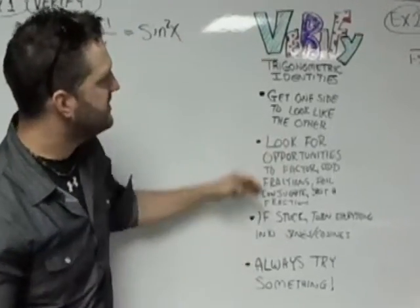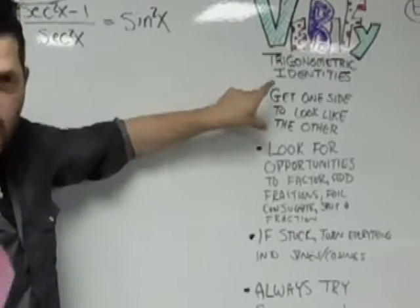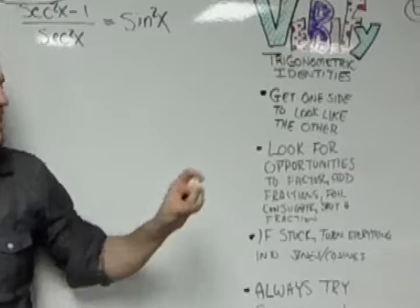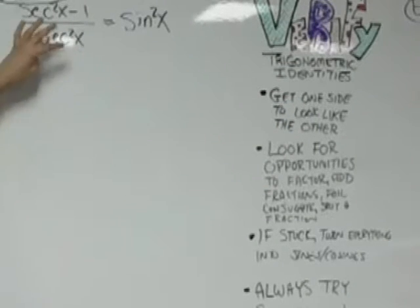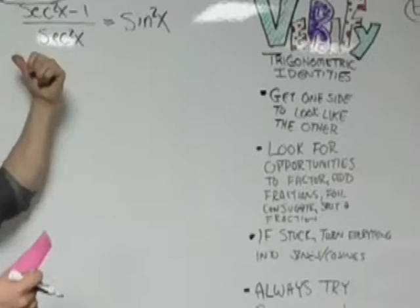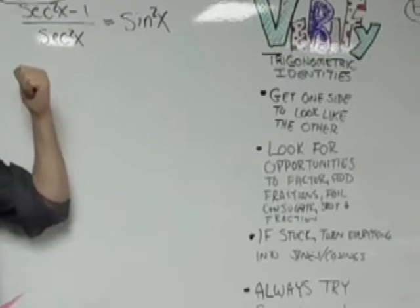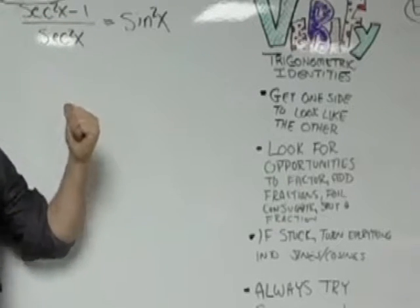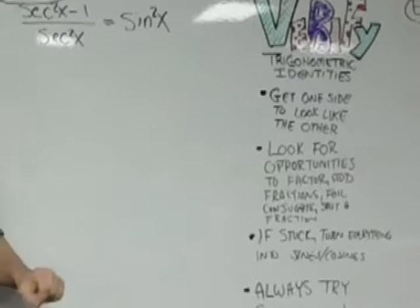Now, I took this out of the book, and here's some of the hints. One, you want to get one side to look like the other. For the most part, you want to start with the more complicated side. So you want to take the more complicated side over here, which is secant squared x minus 1 over secant squared x, and we're going to try to manipulate it so that it eventually will end up looking like sine squared x, and we're not going to do anything to the right side.